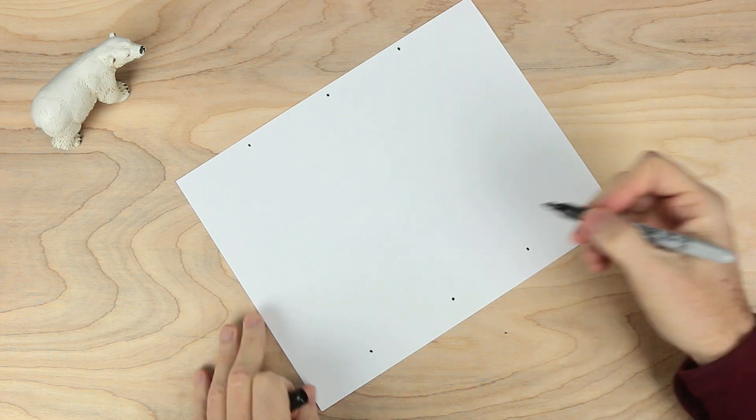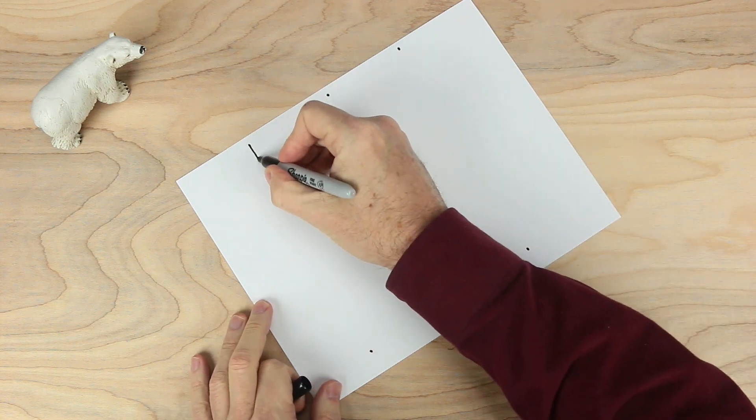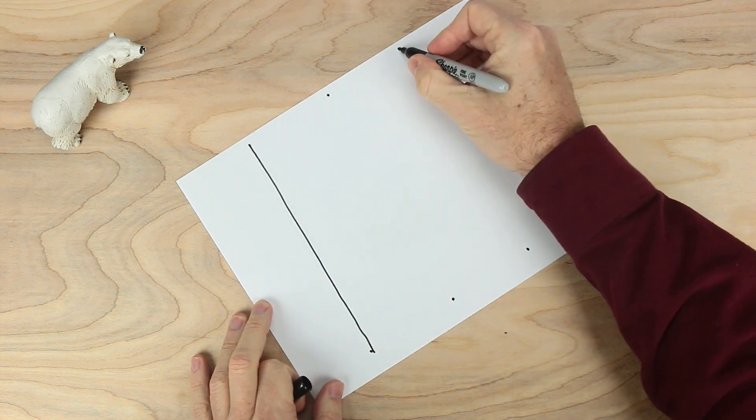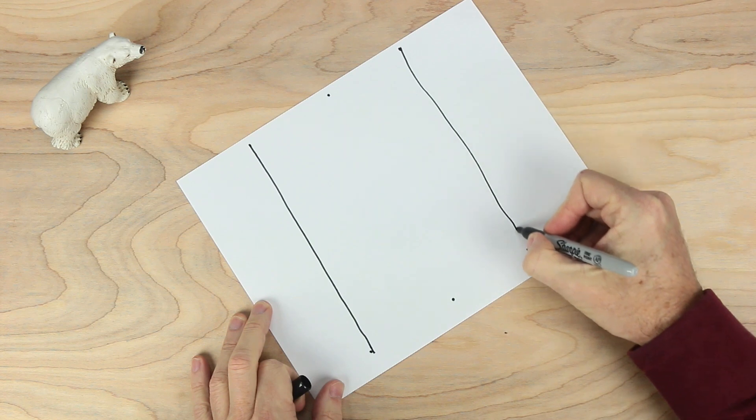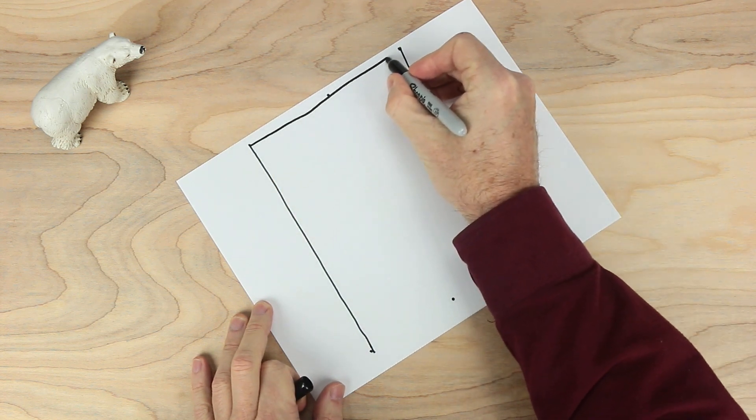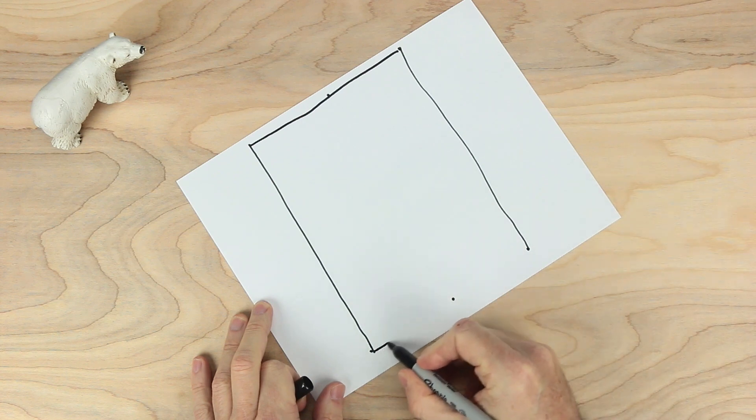Now we're going to make a rectangle. Let's join these two dots. And these two. And across the top. And across the bottom.